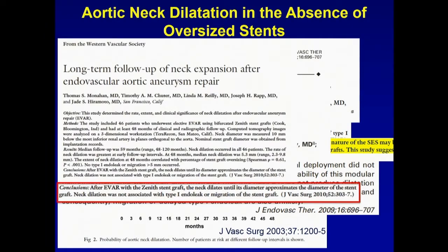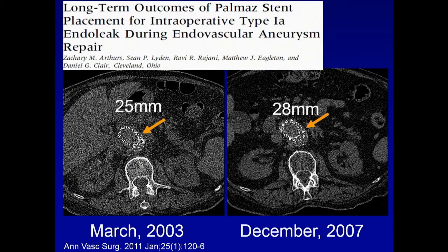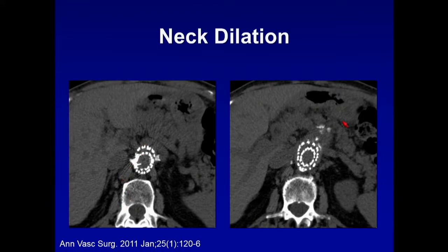Contrast that to Dr. Parodi's work — in the first EVAR, done with Ian Palmaz using a balloon-expandable Palmaz stent, there was an absence of proximal neck dilation; it stayed static or got smaller, but definitely did not expand. One paper from our institution looked at Zenith grafts where there was not a good proximal seal during the case, and a large Palmaz balloon-expandable stent was used to oppose a type 1 endoleak. Looking back at these patients after a few years, the self-expanding stent had grown while the balloon-expandable stent stayed the same — contributing at least in part to degeneration of the neck over time.